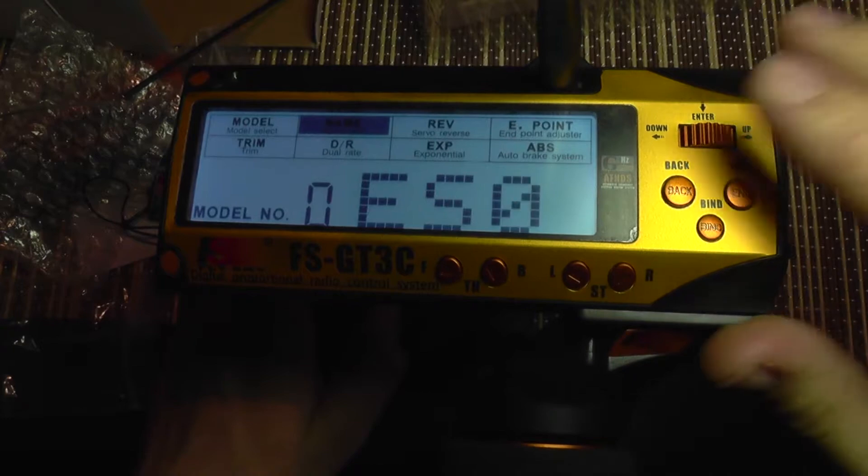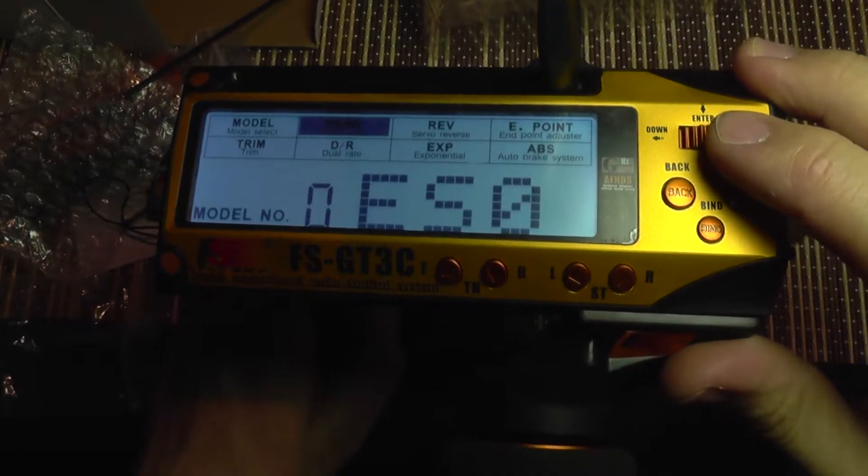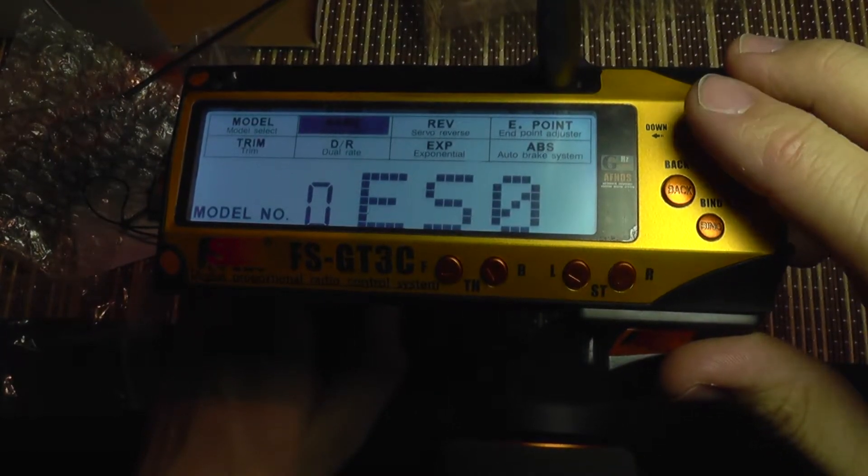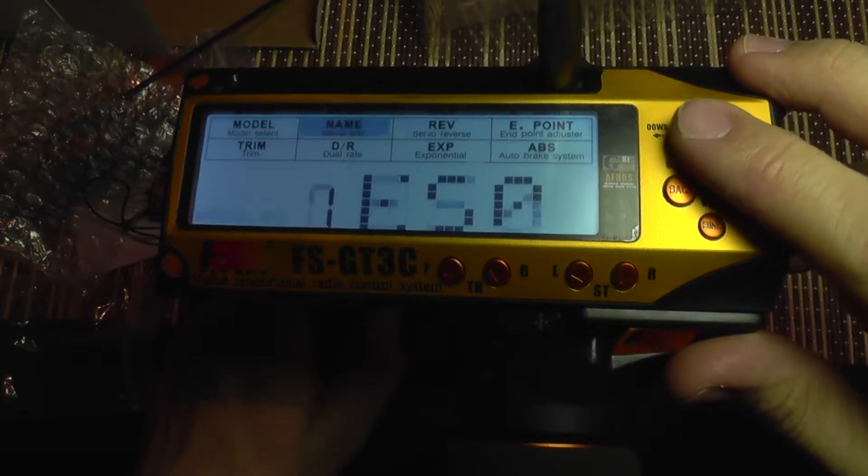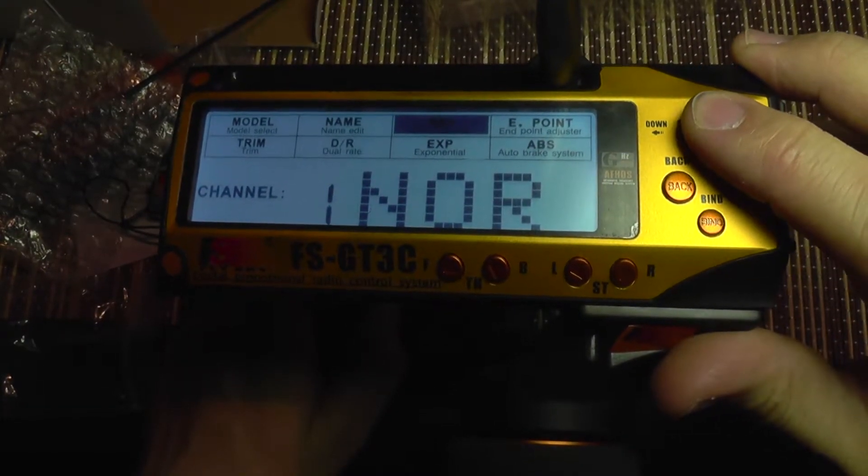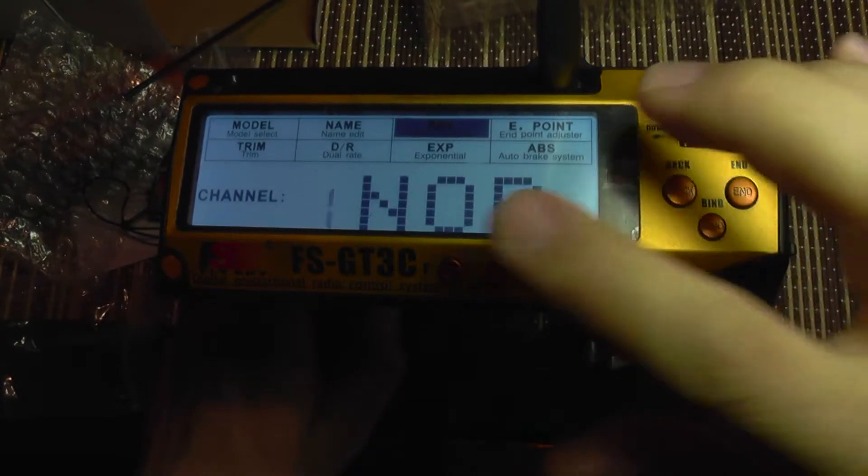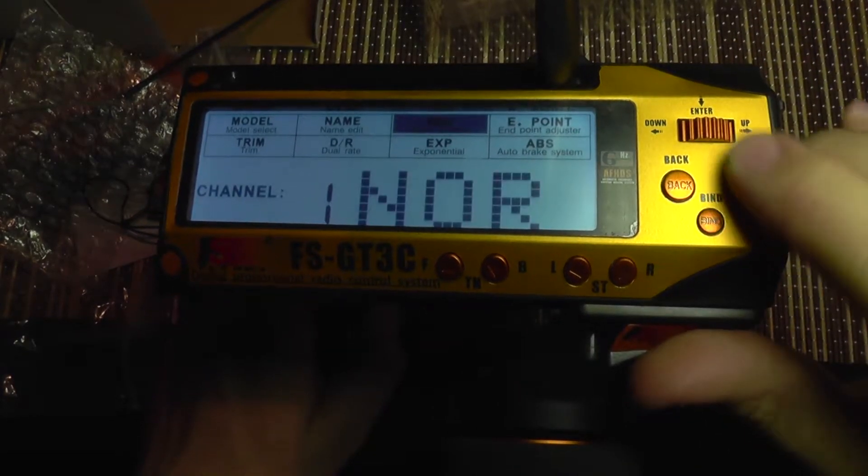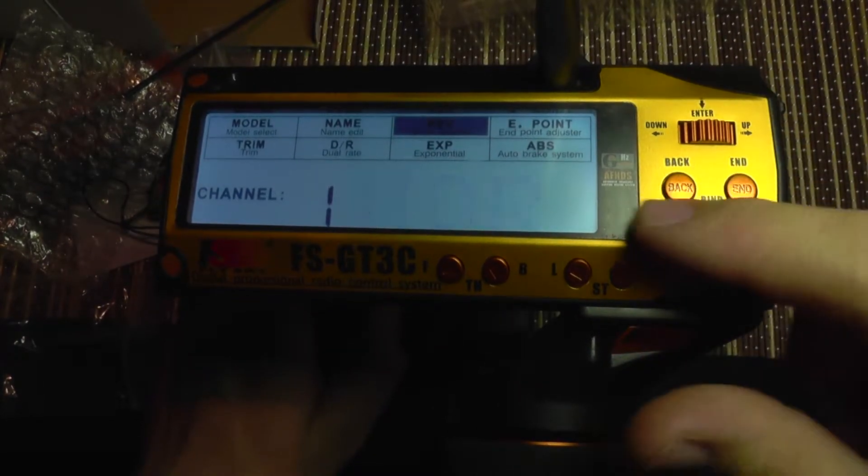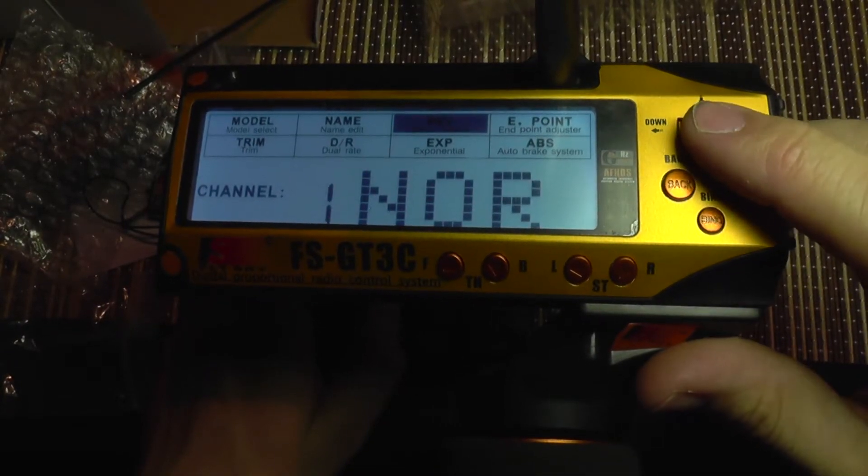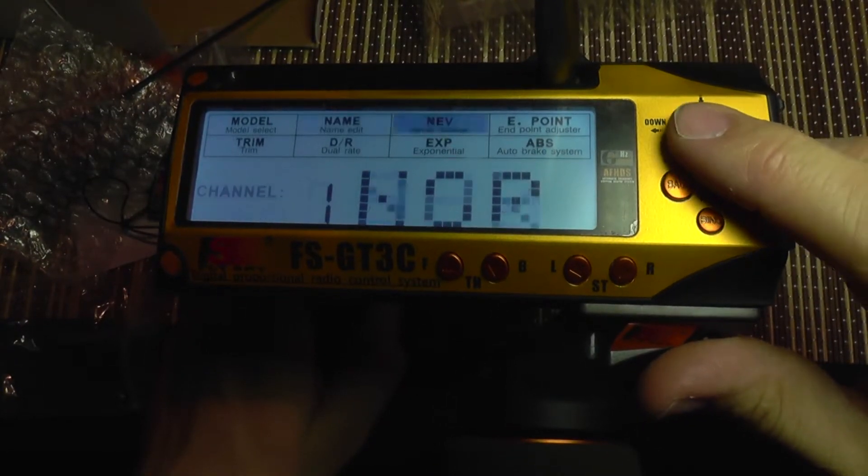And there's other letter and this character. Okay. So you can put 3 letters there. It should be enough for differentiating your models. Of course this is the servo reversing. You can reverse it or not. You can choose the channel to be reversed and choose if you want to reverse it or not. Okay. Let's move on further.